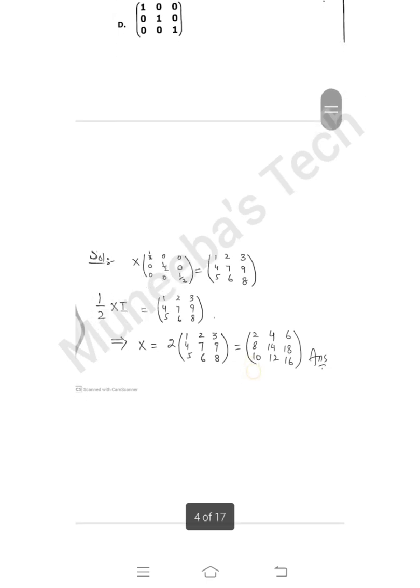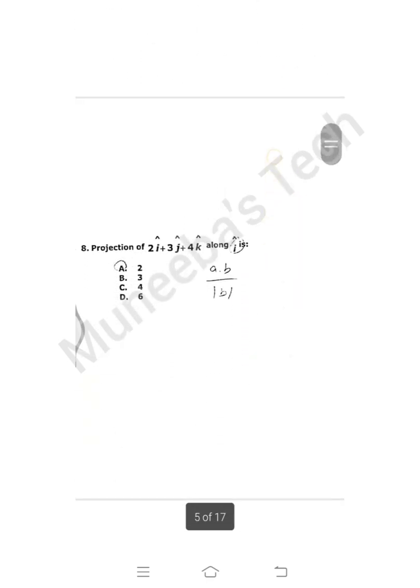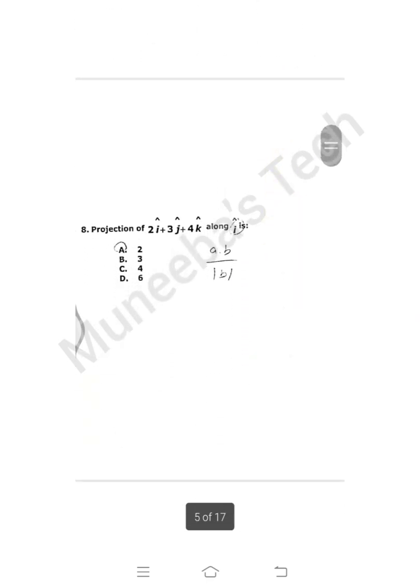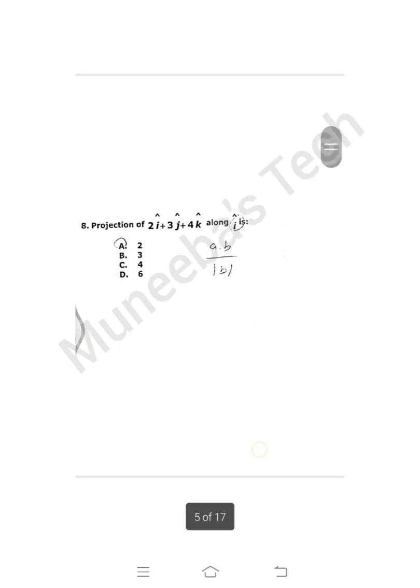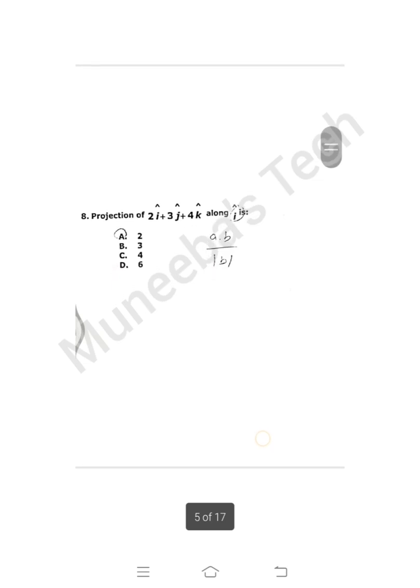Question 8: The projection of 2i + 3j + 4k along i unit vector. The formula for projection of a on b is (a·b)/|b|, which equals 2.